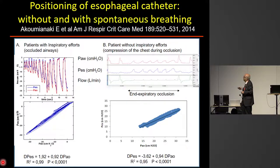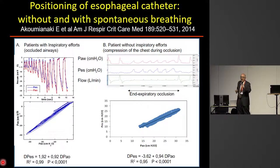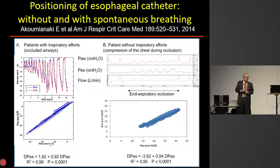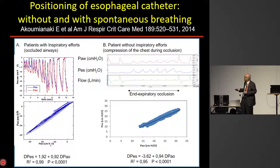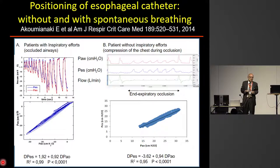The same can be done in patients without inspiratory effort: you close the airways, gently push on the thorax with airways occluded, artificially increasing pressure in the thorax and esophagus, and again look at the relationship between changes in esophageal pressure and airway pressure. This is more theoretical than practical, and in at least 40 to 50% of cases we are not able to reach agreement between changes in esophageal pressure and changes in airway pressure at occlusion.